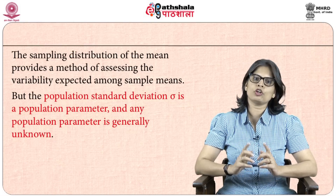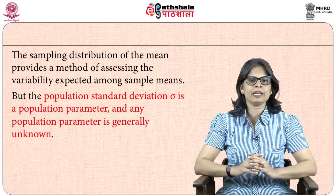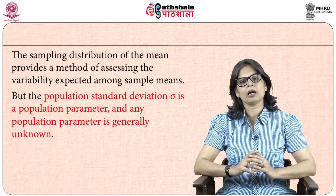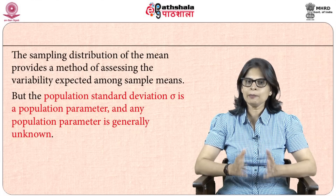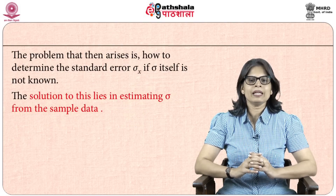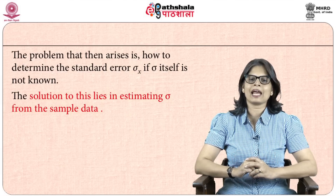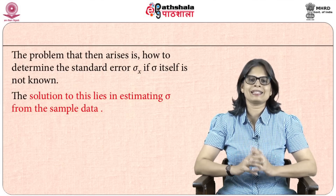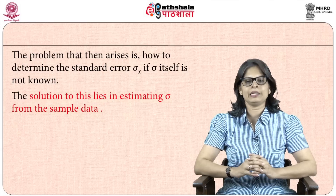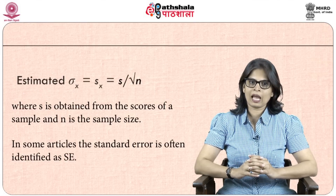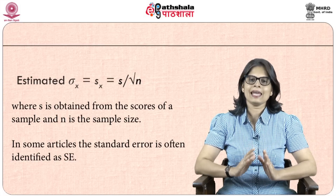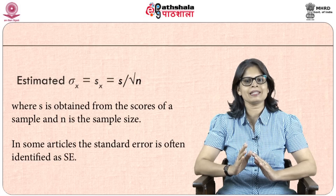The sampling distribution of the mean provides a method of assessing the variability expected among sample means. However, the population standard deviation sigma is generally not known. The problem is how to determine the standard error sigma-x if sigma itself is not known. The solution lies in estimating sigma from the sample data. We estimate sigma-x, denoted by small s-x, as s divided by the square root of sample size n.